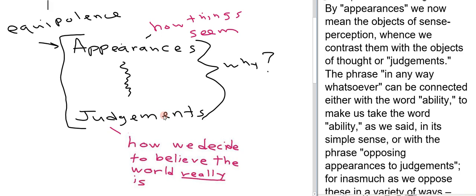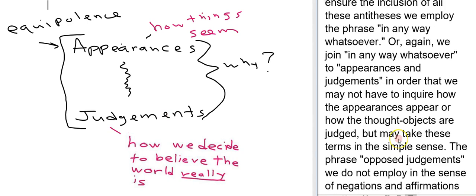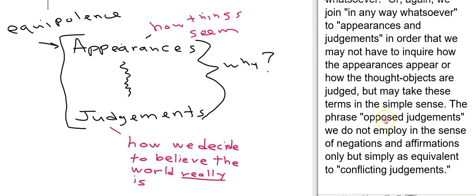An opposition of appearances would be something like the world looks a certain way to me when I look at it this way and it looks a certain way to me when I look at it that way. And as we've seen this is supposed to lead us to a state of equipolence.